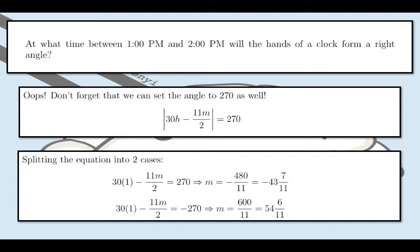We would solve for m when the angle formed equals 270 degrees. Same thing, we have h equals 1 just like the previous example. So same case, just solve for m. We're going to get two values for m again: m equals negative 480 over 11, which is negative 43 and 7 over 11. The other value of m is 600 over 11, which is 54 and 6 over 11.